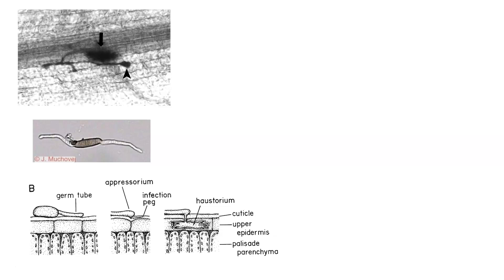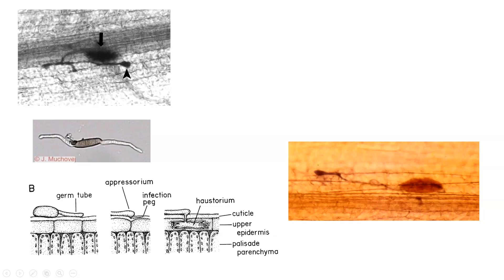Haustorium—biotroph. Puncture, kill—necrotroph. This shows you another one, and you can see the spore over here on the right hand part of the photograph. It's a larger mass, and then the little tube coming out, the appressorium being formed over top where it is penetrating through the host defenses of the cuticle and the cell wall.